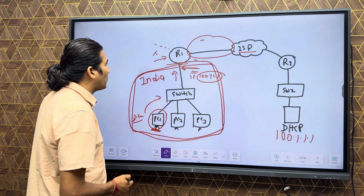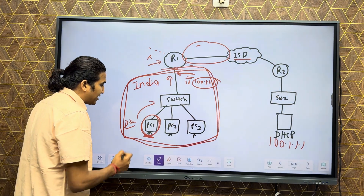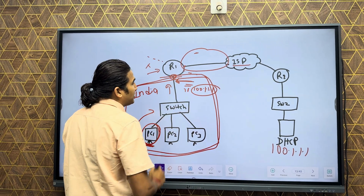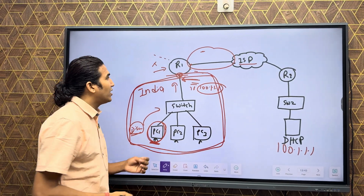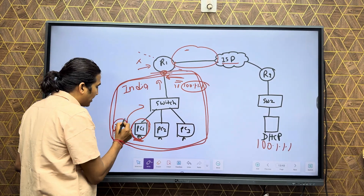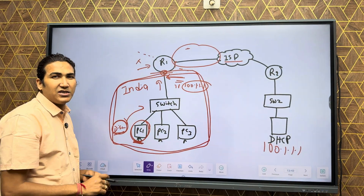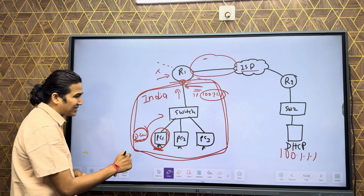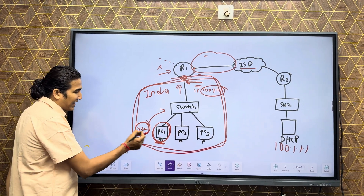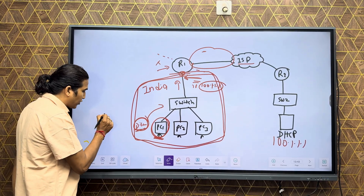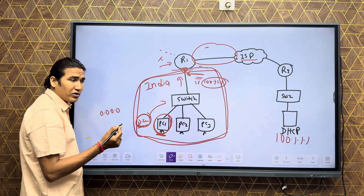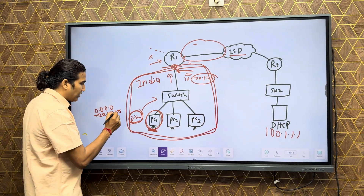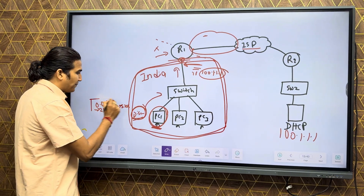Now, when the PC client machine generates a Discover message, it is sent to the switch, the switch sends it to the router, and the router receives it. Since the relay agent feature is enabled, the router will convert this broadcast Discover message into a unicast Discover message. In the Discover message, the source address is 0.0.0.0 and the destination address is broadcast 255.255.255.255, as seen in the IP header.